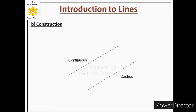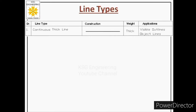So now we get the idea about how lines differ from each other — either based on their construction or based on their thickness. We will now discuss the most commonly used lines in engineering drawing. A table is shown here: the second column gives the type of line, the third column shows construction, the fourth column shows weight or thickness, and the last column gives the applications.